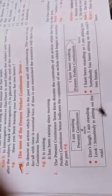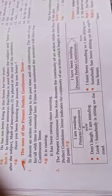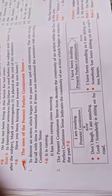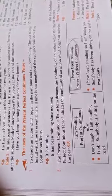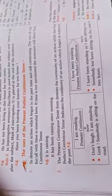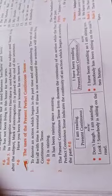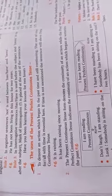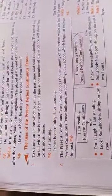I have been reading. Consider: 'I am standing' or 'Somebody is sitting on the road' — in these sentences, time is not mentioned, so they are present continuous. But 'I have been standing' and 'Somebody has been sitting on the road for two hours' — here, for two hours is mentioned, so this is present perfect continuous tense.